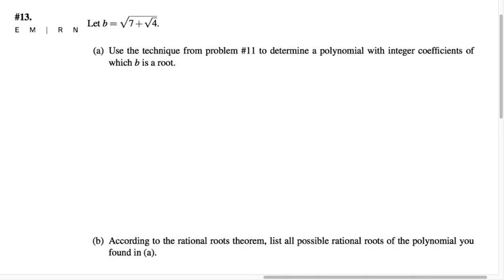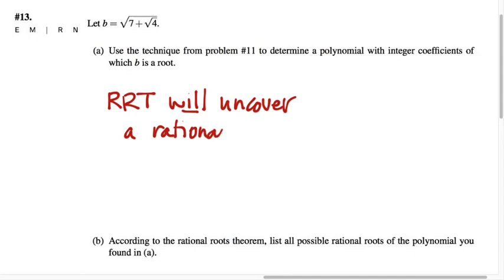The second problem contains a word of caution, and the word of caution is, just because we write down an algebraic number using square root symbols does not necessarily mean that that algebraic number is irrational. What you'll probably find in this problem is that when you find a polynomial of which this is a root, using the same techniques that we've been using, and then you apply the rational roots theorem to it, the rational roots theorem will uncover a rational root for the polynomial of which this b is a root.